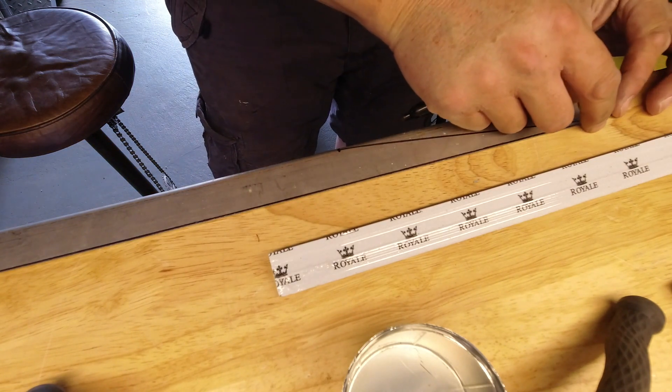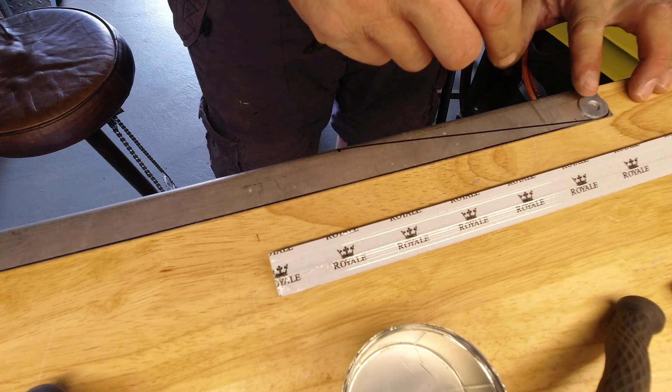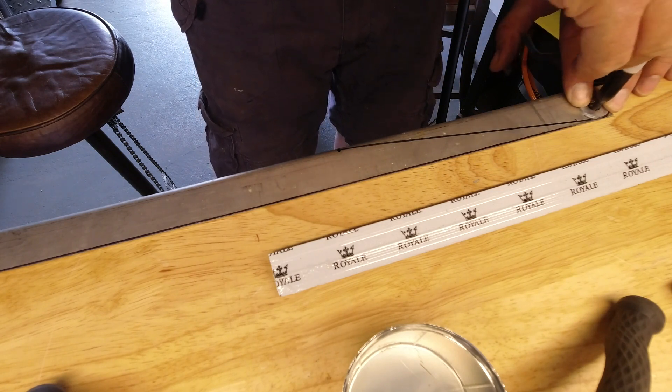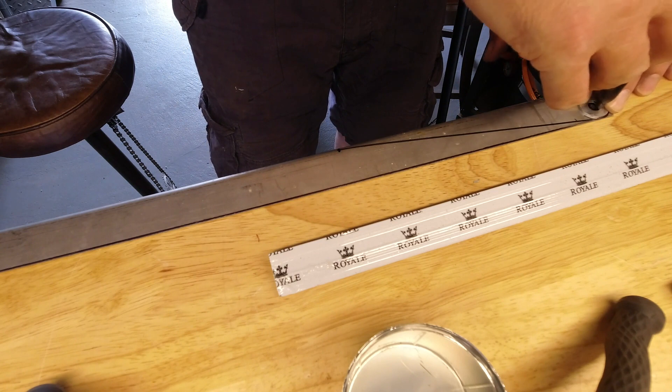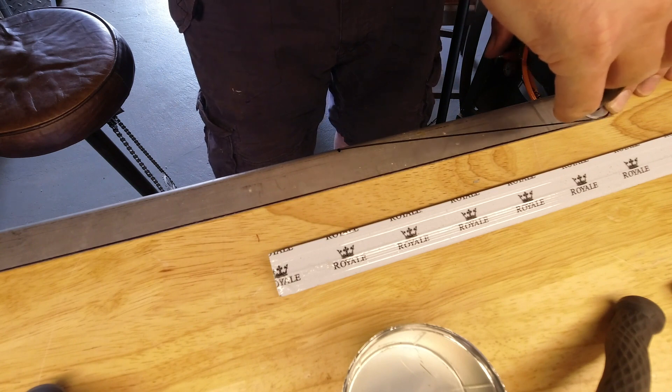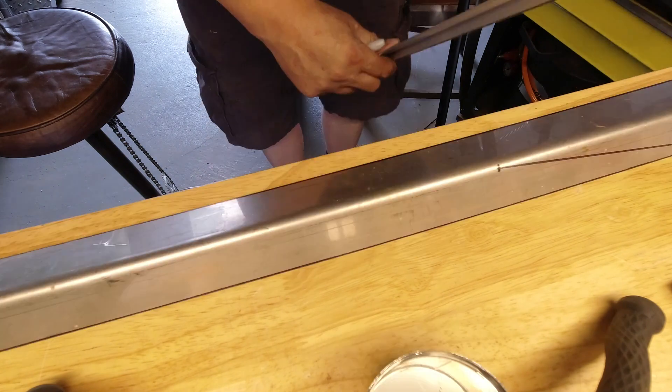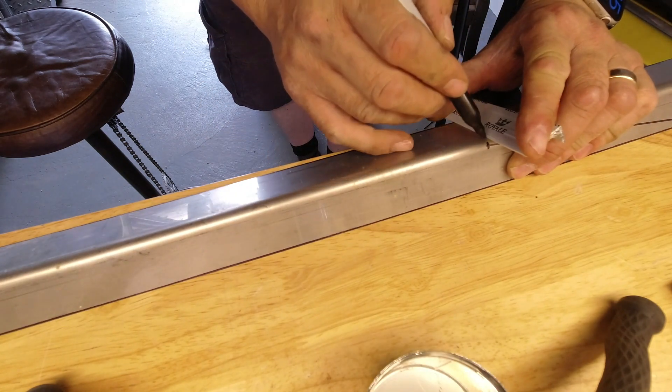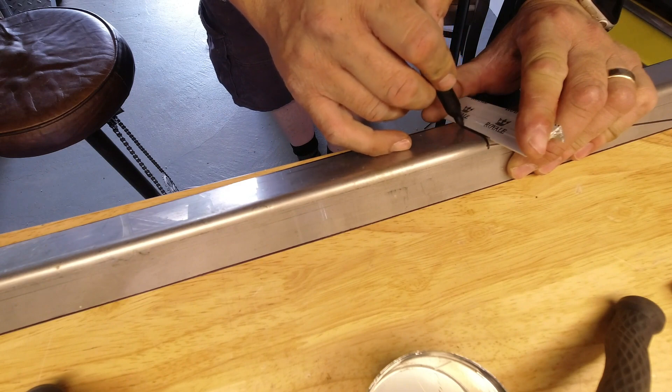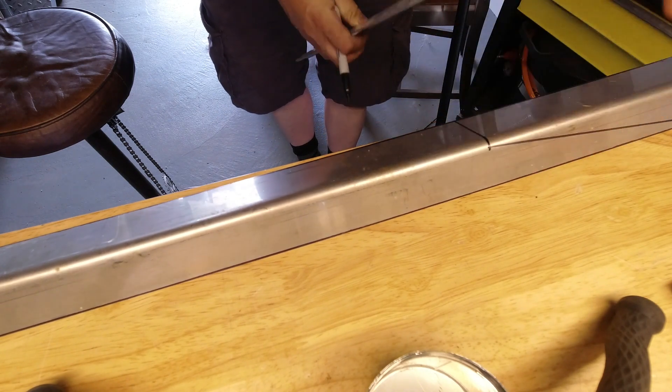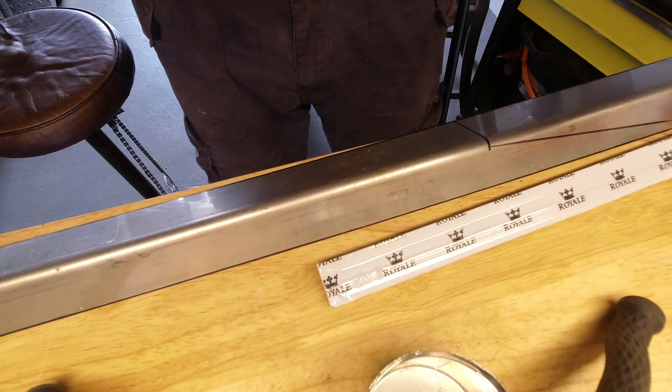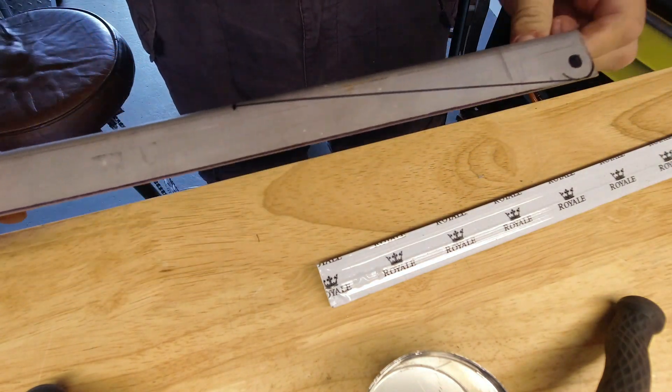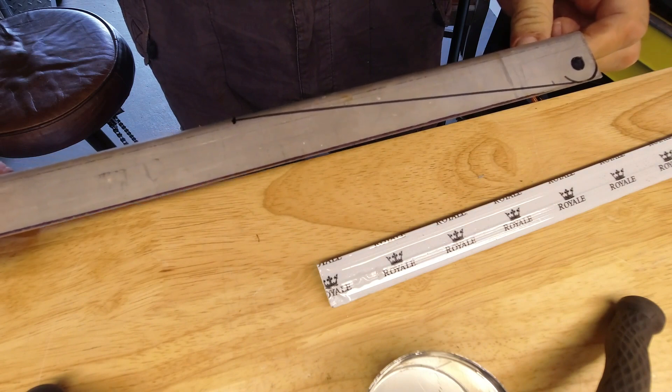Now washer back on, mark the hole position and straight across. Now I'm going to use the angle grinder to cut that out.